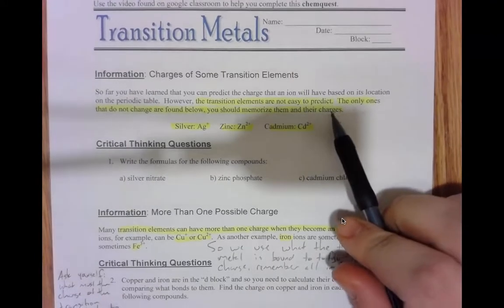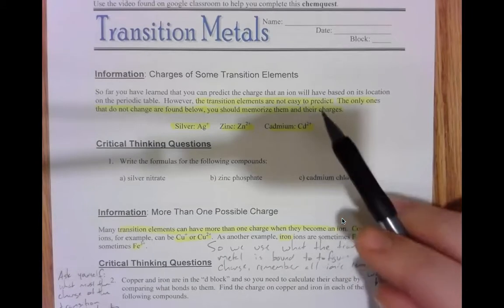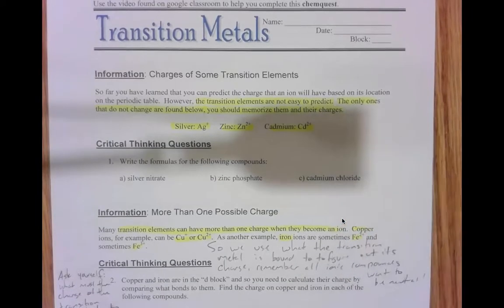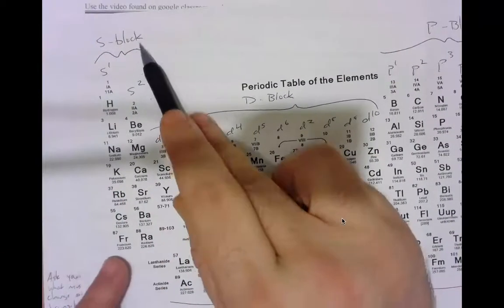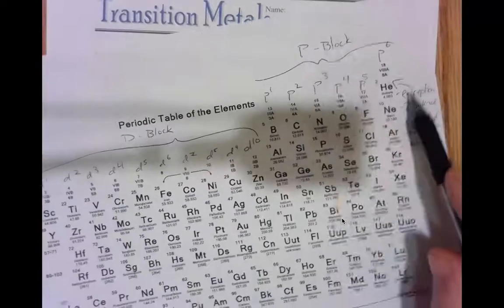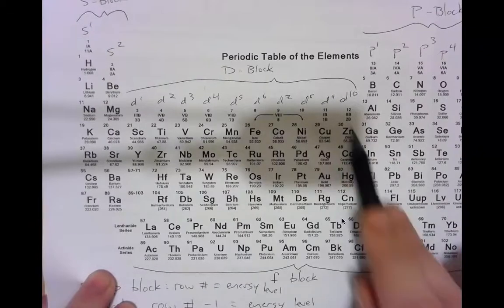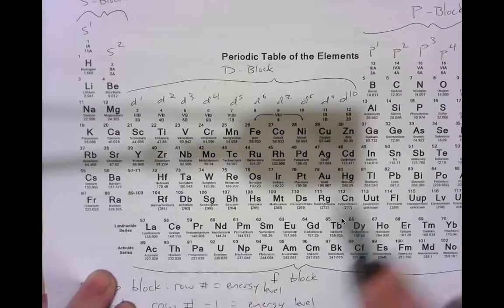What I highlighted is the important stuff. Transition metals are not easy to predict. We can predict the charges of the elements that are in the S and the P block. However, we cannot do that for the transition metals. We can predict the charges for the S block and for the P block, but the transition metals, which are found in the D block, we cannot predict.